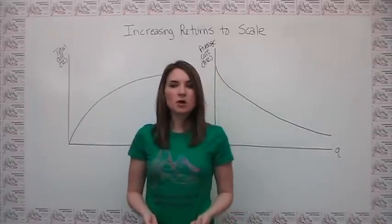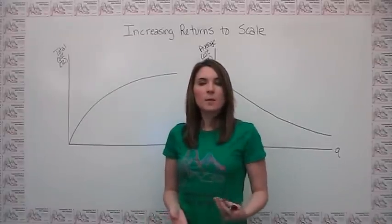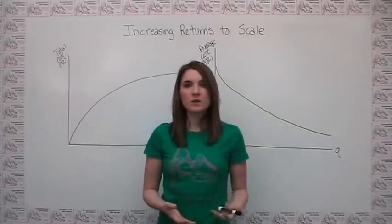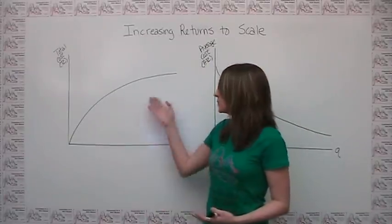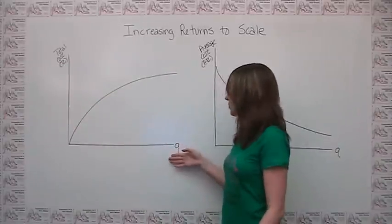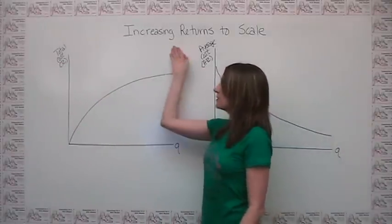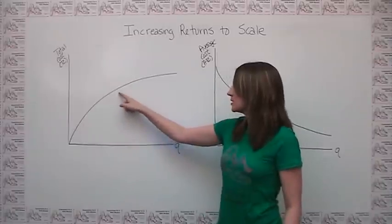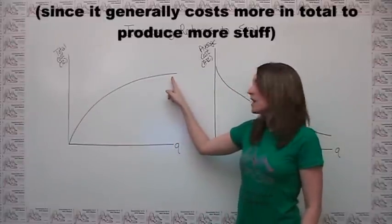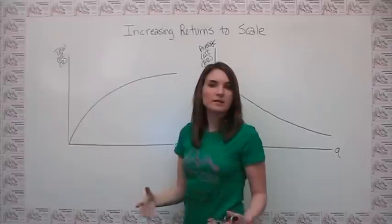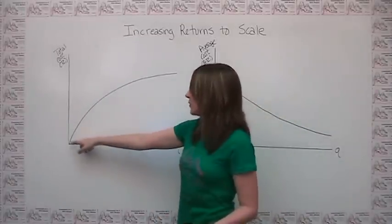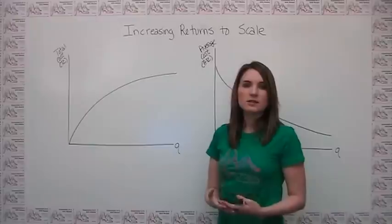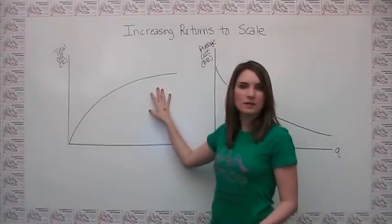Increasing returns to scale, also called economies of scale, basically represents a situation where it's cheaper to be bigger. The first way we could show this is by looking at total cost versus quantity produced. If a firm exhibits increasing returns to scale, then you'll see that despite the fact that total cost increases as quantity increases, it increases at a rate slower than the quantity. So if we compare this to, for example, a straight line, we see that we start getting a slower increase in the rate of cost than we get in the increase in quantity.